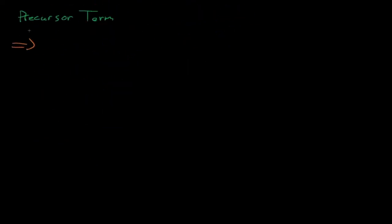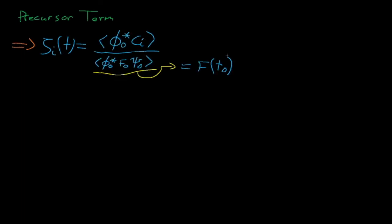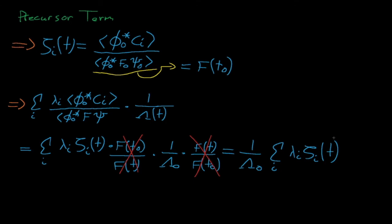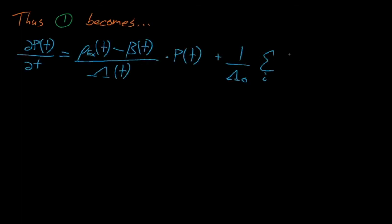Similarly, if we remember the definition for squiggle, we can recast the precursor term as a sum over each precursor group of lambda i times squiggle i times f of t naught over f of t times 1 over lambda naught times f of t divided by f of t naught. By bringing in our previous simplification for lambda, we can show that all the f terms cancel and that the precursor term is just equal to 1 over lambda naught times the sum over each precursor group of lambda i squiggle i. Thus, after we bring all these simplifications together, we arrive at the first equation in our exact point reactor kinetics equations.